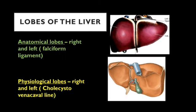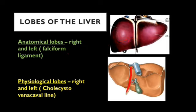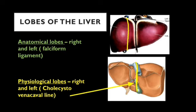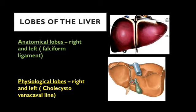Now for the lobes of the liver. The anatomical division is by the falciform ligament anteriorly and by the fissures for the ligamentum venosum and ligamentum teres posteriorly, dividing the liver into right and left lobes — the right lobe being larger. In the physiological division, an imaginary line called the cholecystovena cava line passes from the groove for the IVC to the fossa of the gallbladder posteriorly, and to the right of the falciform ligament anteriorly. This physiological division creates two equal lobes, each receiving respective branches of the hepatic duct, hepatic artery, and portal vein — hence they are called functional lobes.